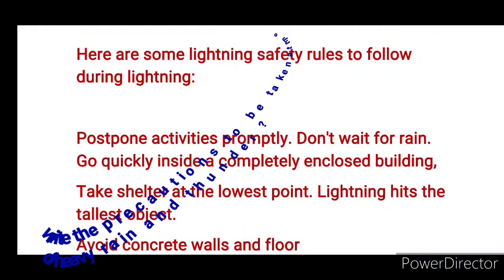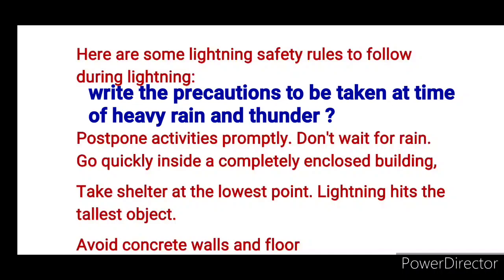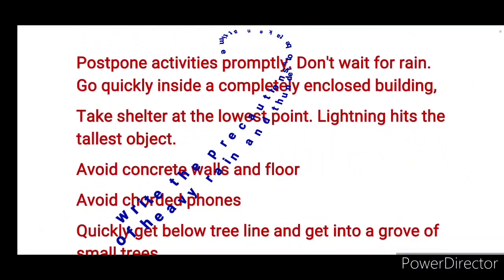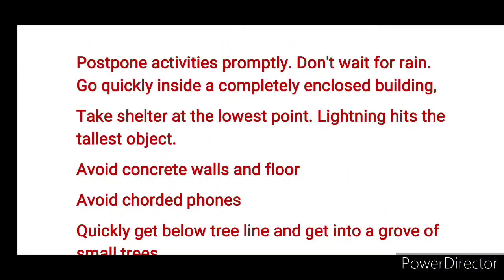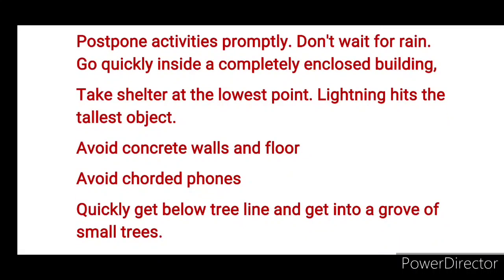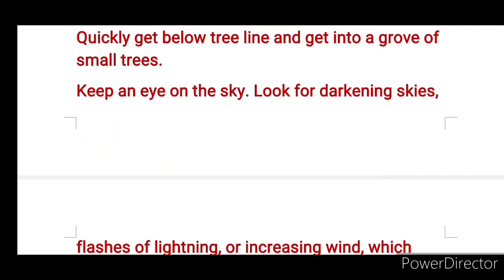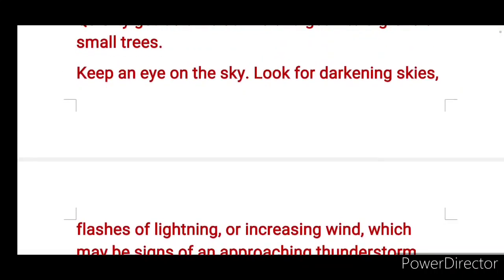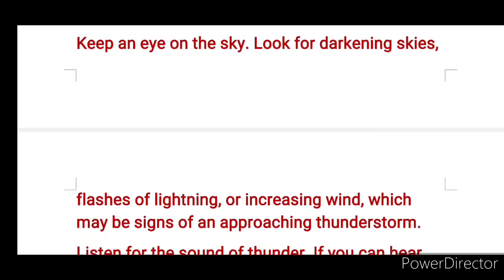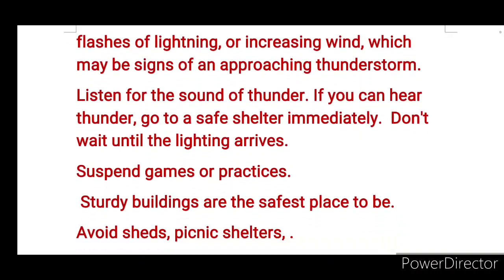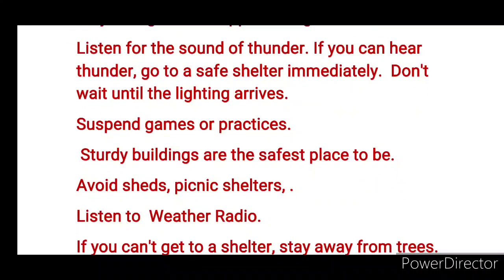What are the safety measures to be taken during lightning, storm, and rain? Here are some lightning safety rules to follow: Postpone activities promptly. Don't wait for the rain. Go quickly inside a completely enclosed building. Take shelter at the lowest point. Lightning hits the tallest object. Avoid concrete walls and floor. Avoid corded forms. Quickly get below the tree line. Keep an eye on the sky. Look for darkening skies, flashes of lightning, or increasing wind which may be signs of an approaching thunderstorm. Listen for the sound of thunder. If you can hear thunder, go to a safe shelter immediately. Don't wait until the lightning arrives.